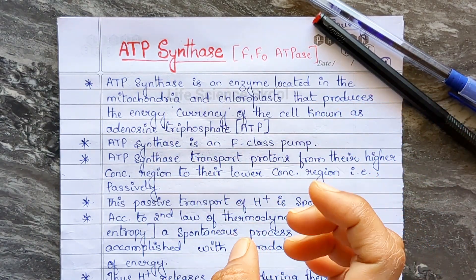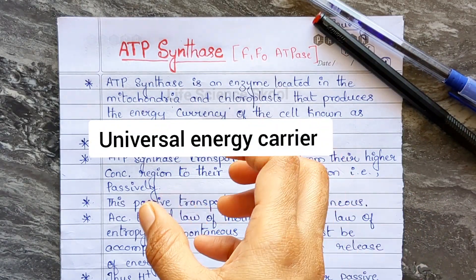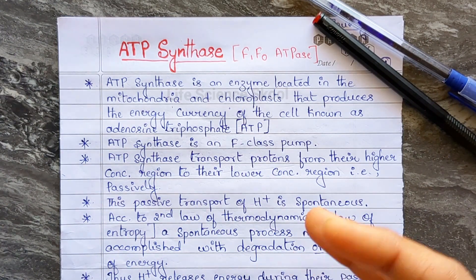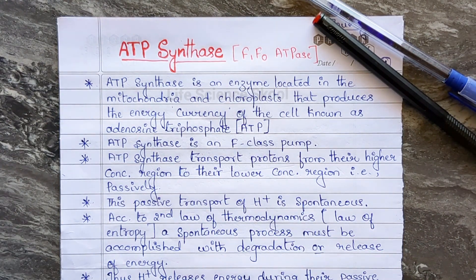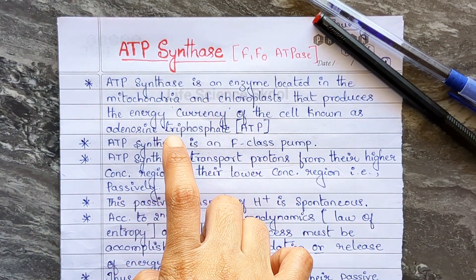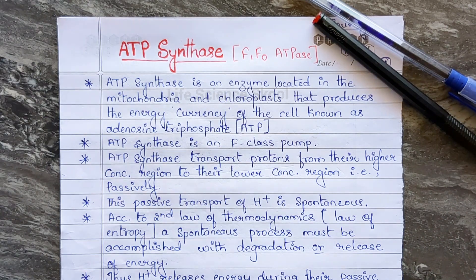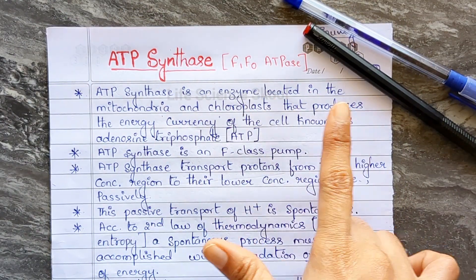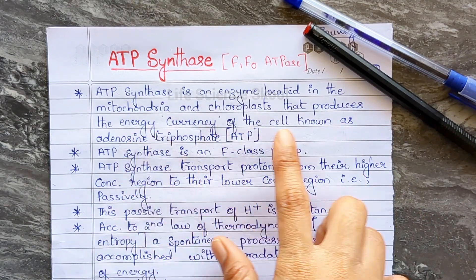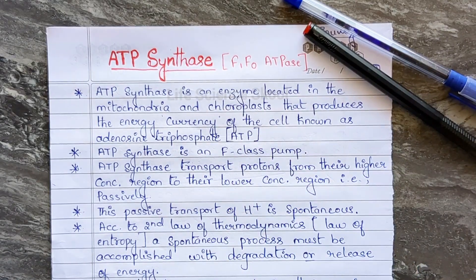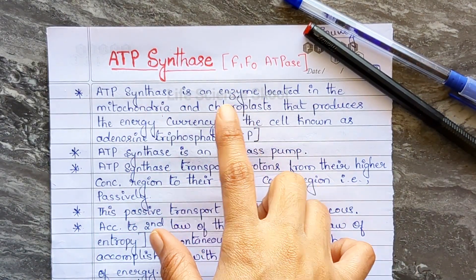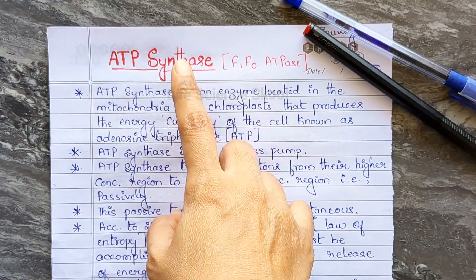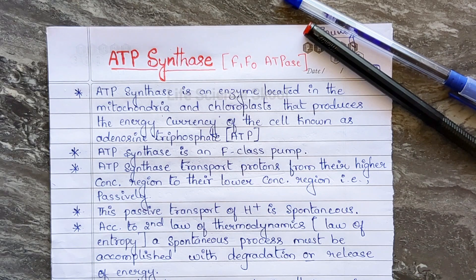ATP is also referred to as a universal energy carrier, or molecular currency. ATP production provides the energy for all intracellular activities — all activities occurring inside the cell. The definition: ATP synthase is an enzyme located in the mitochondria and chloroplast that produces the energy currency of all cells, known as adenosine triphosphate.